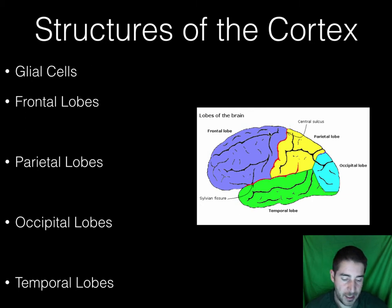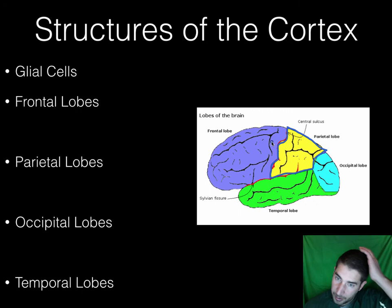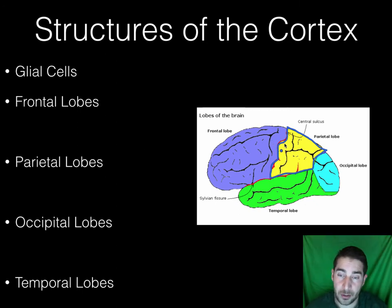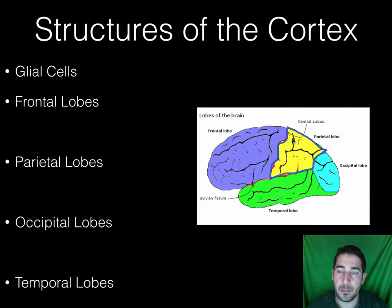Right behind the frontal lobe is the parietal lobe. It's roughly on the top middle of your head on both sides — you've got lobes on both sides of your head; we're looking at the left side here. The parietal lobe is mainly touch and sensory processing, so your perception largely goes on here.